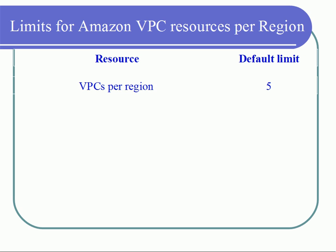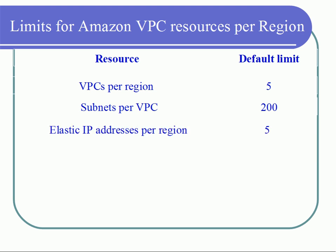By default, in a region you can create only 5 VPCs per subscription. And in each VPC, you can create up to 200 subnets. We can also have 5 elastic IPs per region.